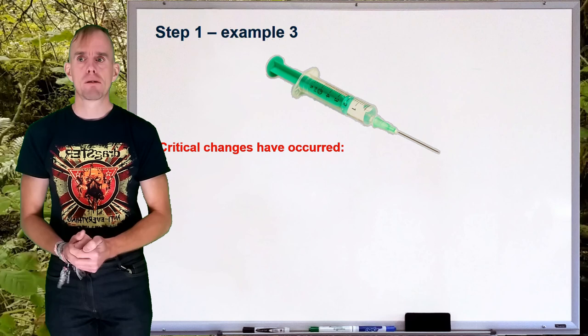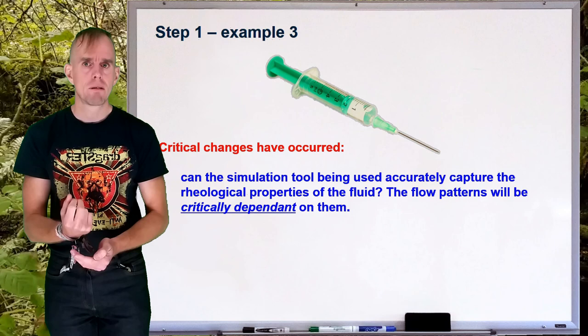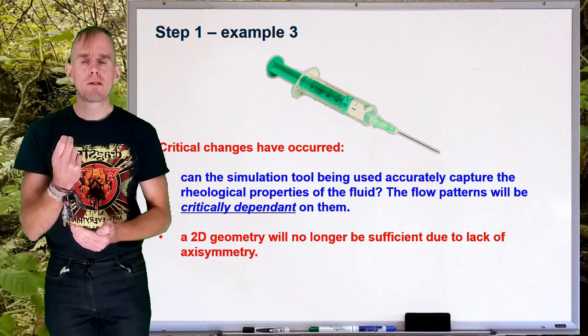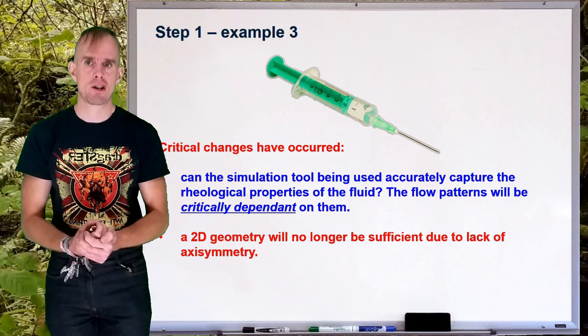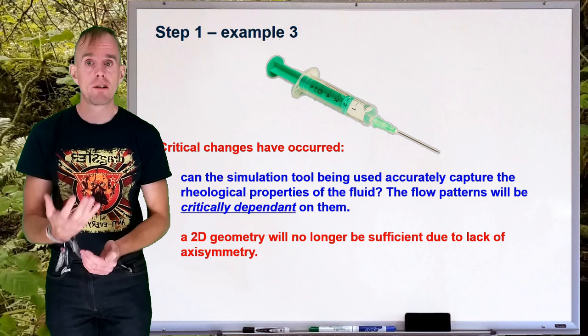So, we've made some critical changes. We need to ask ourselves some questions. Can a simulation tool you're using sufficiently capture the rheology of the fluid? Because the flow patterns are going to be critically dependent on the rheology. And this introduces another concept you need to think about, which is one of your mental model. Because we need to effectively know what to expect as an answer before we do the calculation. So, have we got a sufficiently clear mental model ourselves of what would happen in such a geometry with a viscoelastic liquid? Now, we've broken symmetry, so we need to go fully 3D. 2D is no longer sufficient.